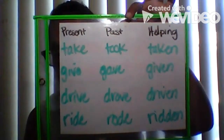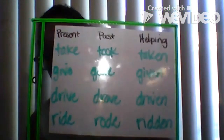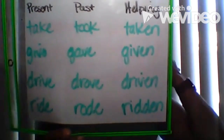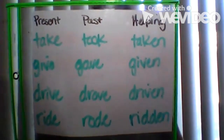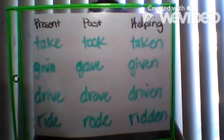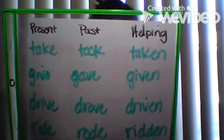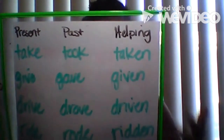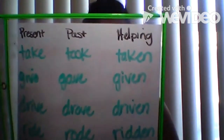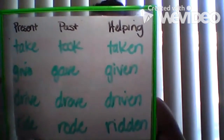Now, can you read the column that is entitled past, the words underneath it? What do you notice about these verbs? Did you say that these verbs have already happened? If you did, that's correct. So if we were to put them with our sentences, we can say those. Now read the words here in the helping column. We already understand that these verbs are going to need a helping verb, so let's put them in a sentence using a helping verb. Emma has taken a break. Mrs. Lopez had given us a quiz. Dad has driven. You have ridden. All of those needed a helping verb to sound better in the sentence.